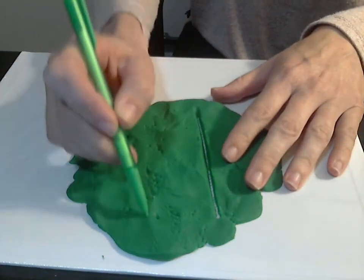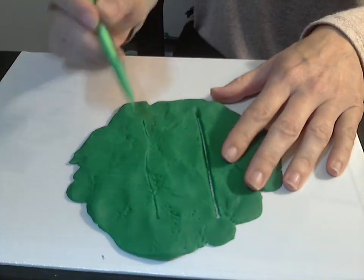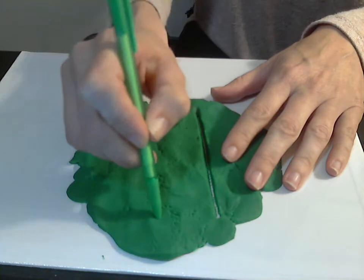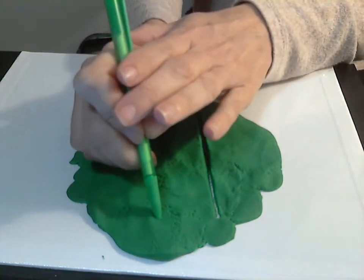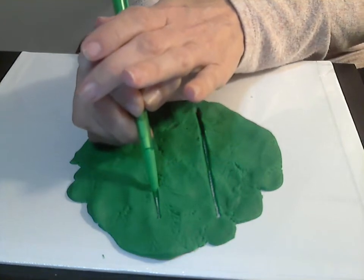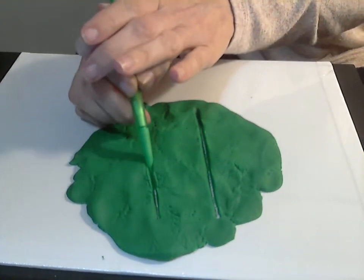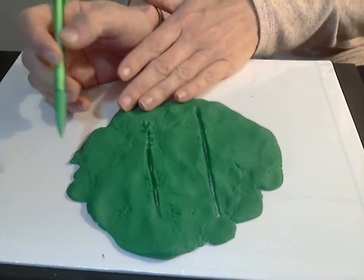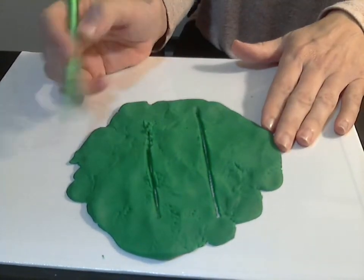Now they might have a hard time the first couple of times because they're still learning how hard they need to press and pull. But you can help them by just providing a little bit of pressure and guiding their pencil down. So you can do that for lines down or lines across.